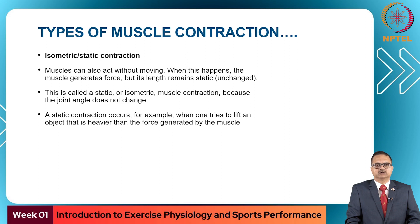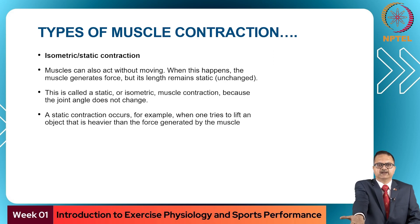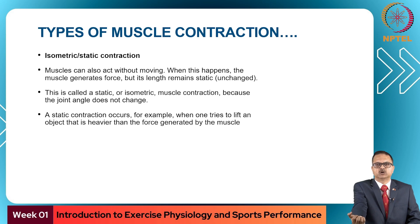Muscles may also act without moving. When this happens, the muscle generates force but its length remains static. This is called a static or isometric muscle contraction because the joint angle does not change. It happens when trying to lift a heavy weight beyond what the muscle can generate — the muscle contracts and produces force but there is no movement.